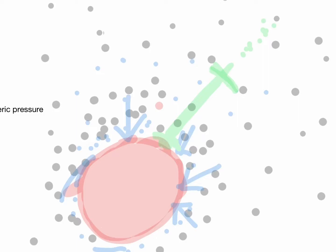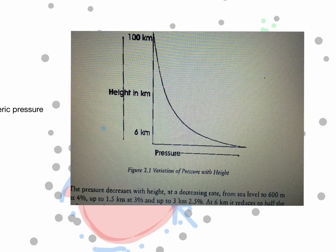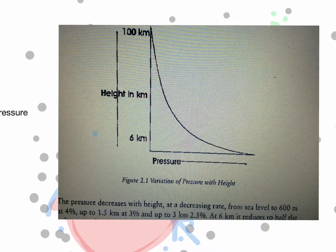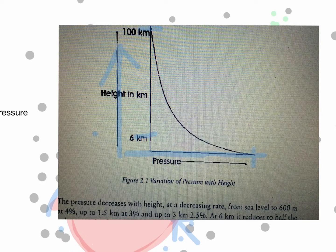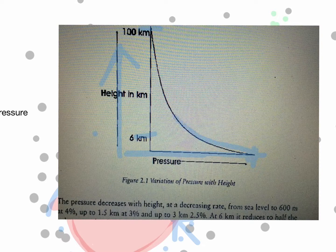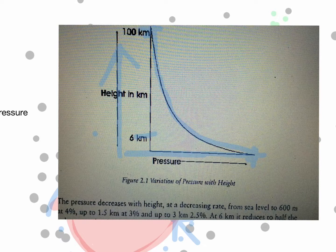Next we will discuss static pressure and dynamic pressure. This diagram shows height against the surface, from 6 km up to 100 km. At the surface, pressure is high, and as you go up the pressure decreases continuously, reaching a very minimum value at 100 km. This is the variation of pressure with height.